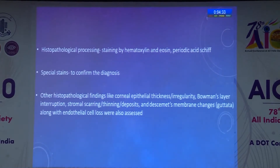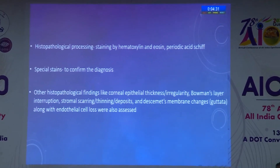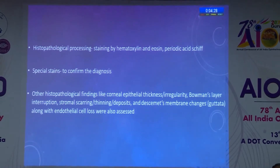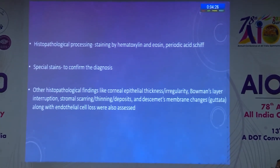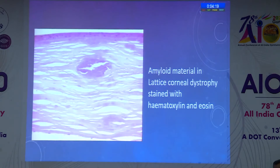Special stains were used to confirm the diagnosis. Other histopathological findings assessed included corneal epithelial thickness, irregularity, Bowman's membrane interruptions, stromal scarring, Descemet's membrane changes and guttae, along with endothelial cell loss.